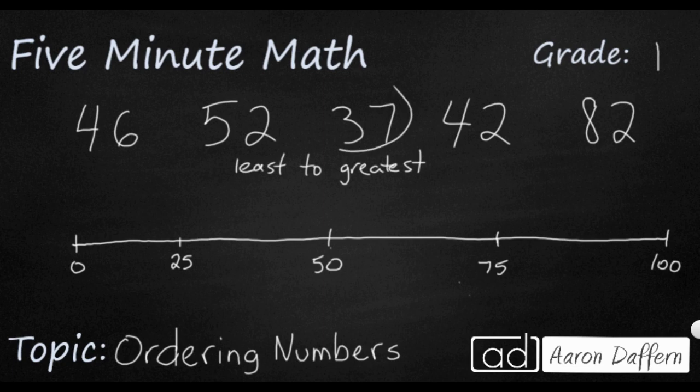So my smallest number is 37. It's got three tens, only one with three tens. It's going to be a little bit bigger than our 25.